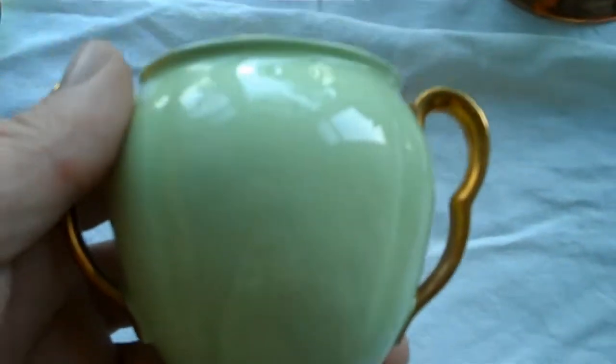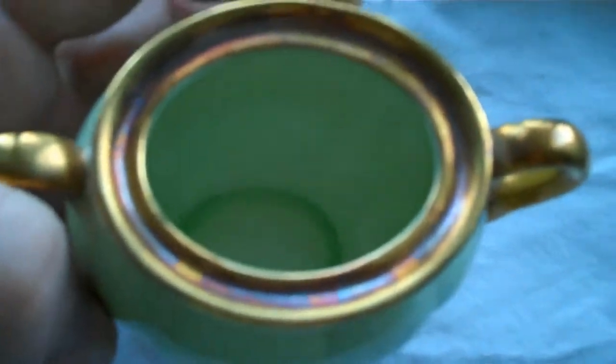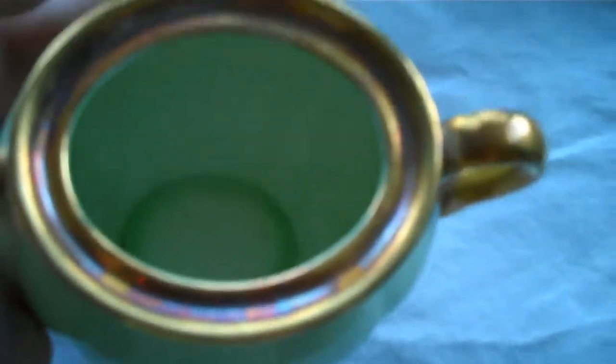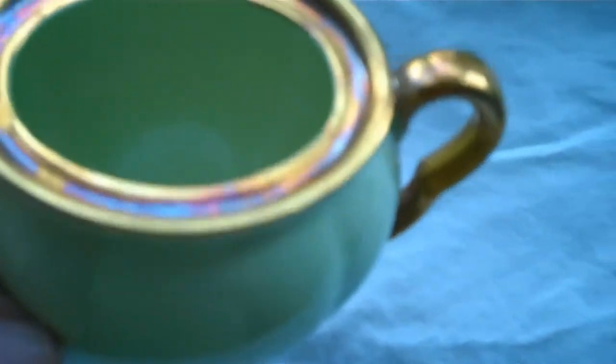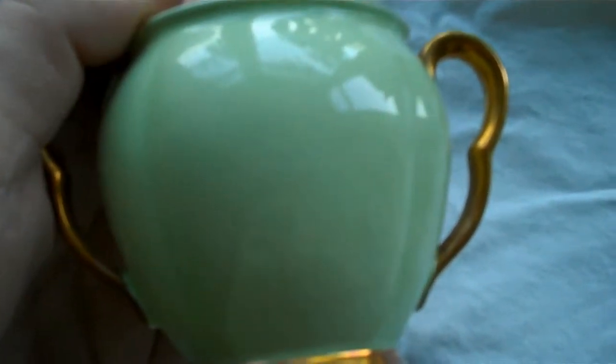Just moving on to the sugar bowl. We can see there is some quite attractive coloration to the gold at the top, where the lid is. The handles are perfectly intact. There is again, as we would expect for a piece of this age, some crazing to the glaze.